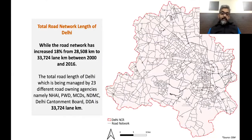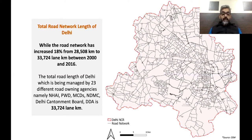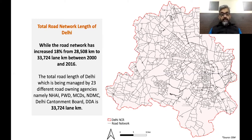Looking at Delhi's road network: it increased 18% from 2000 to 2016, and currently around 34,000 lane-kilometers of roads are in Delhi. That translates to about 18–20% of Delhi's area being under roads — a pretty large figure. Within that road network, we have jurisdiction by MCD, NHAI, PWD, and so on, including Delhi Cantonment. Delhi has the highest area under roads in the country among cities of that magnitude.